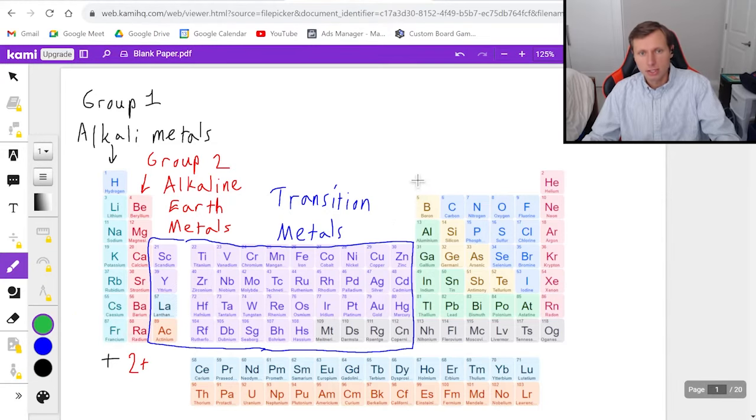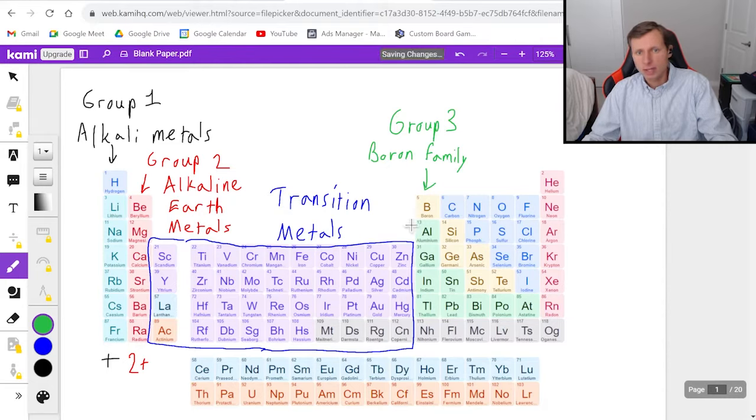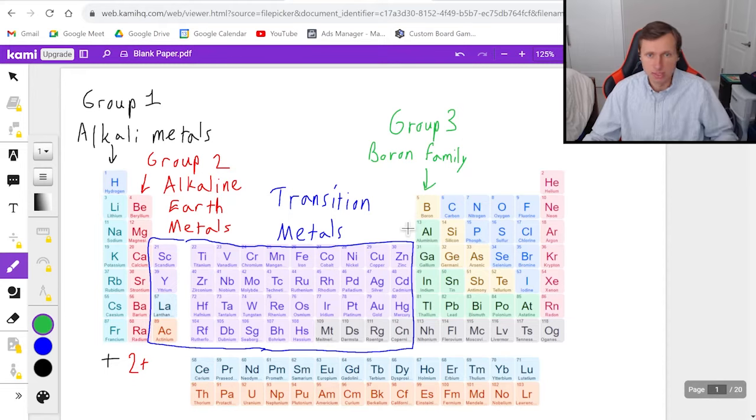Now we're going to move on to the boron group. This is group three for the boron group. It doesn't have a name like the other two. So I'm just going to call it the boron group or boron family. And basically all of the elements in here—well, I don't know about all of them, but definitely boron and aluminum—when they form their ion forms, they are going to be three plus because they have three valence electrons, which is a topic for another day.